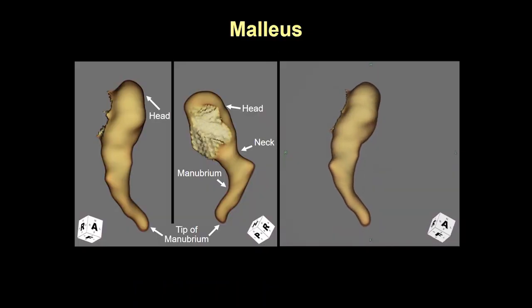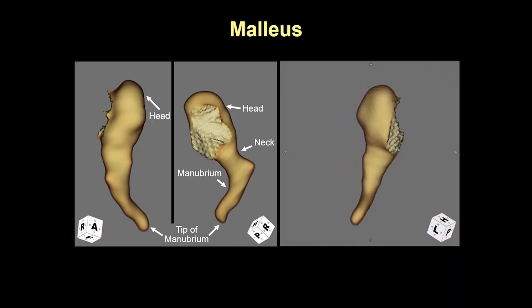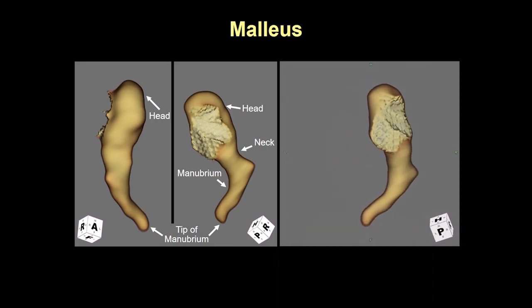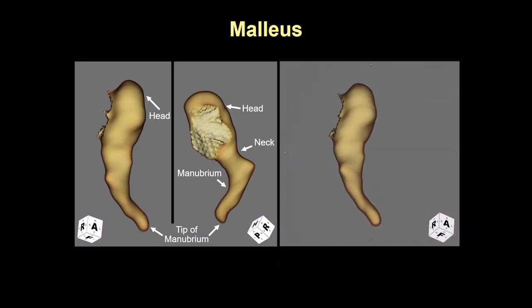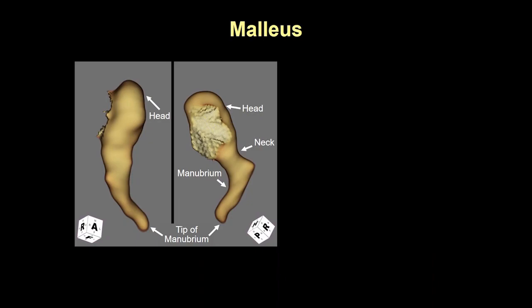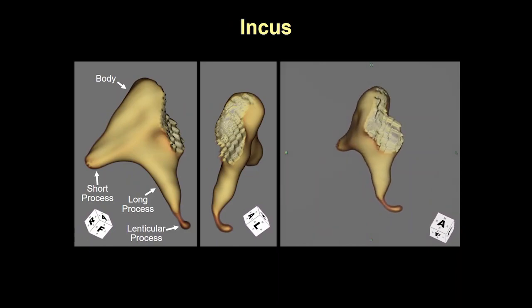The malleus is shaped like a hammer. On its posterior surface it demonstrates a facet which articulates with the body of incus, the neck which provides attachment to the tensor tympani muscle, and the manubrium which attaches to the tympanic membrane at a point known as the umbo.